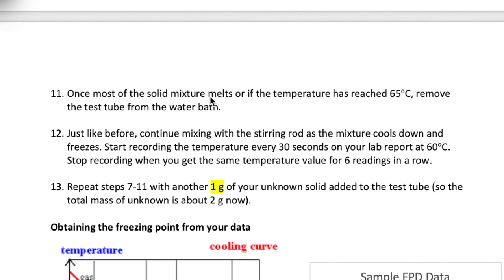At that point, remove the tube from the bath, turn off the burner, continue mixing with the stirring rod, and record the temperature every 30 seconds starting at 60 degrees Celsius. Like before, you can stop recording when you get the same reading six times in a row.